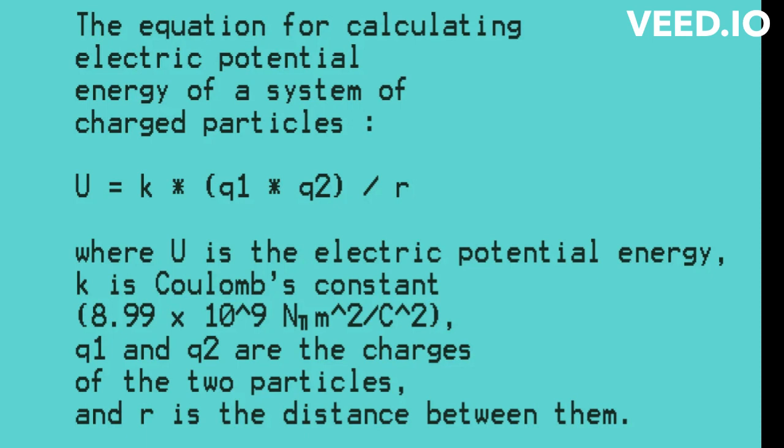Where U equals electric potential energy, k is Coulomb's constant, 8.99 times 10 to the power of 9 N·m² slash C², q1 and q2 are the charges of the two particles, and r is the distance between them.